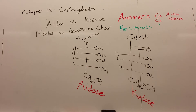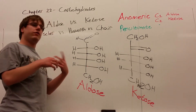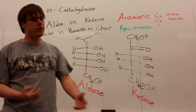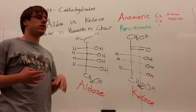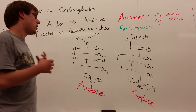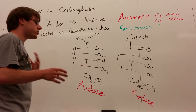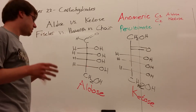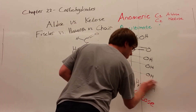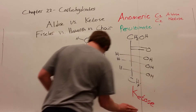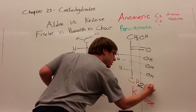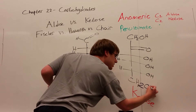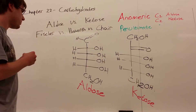The first part of carbohydrates we have to talk about are the differences between aldoses and ketoses, and then translating these into Haworth projections and chair conformations. Let's start by defining the key differences: an aldose has an aldehyde in it, and a ketose has a ketone in it.